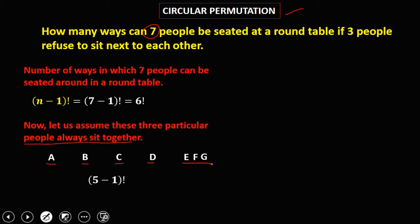Since we can arrange these 3 persons - we can have person E first, person F first, or person G first - this one is 3!. So (5-1)! equals 4! times 3!.